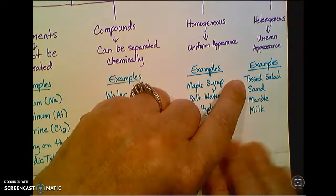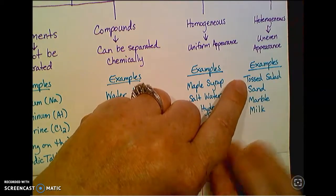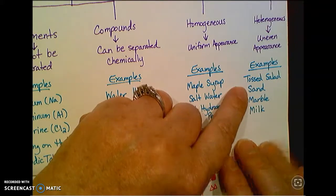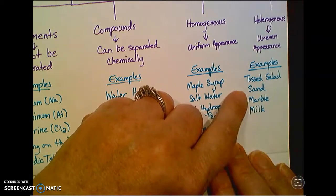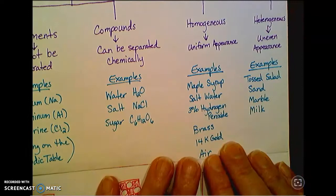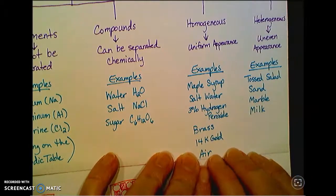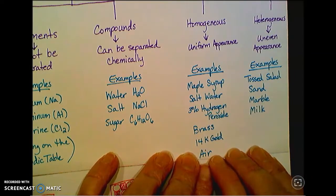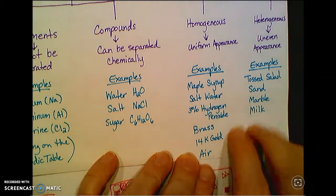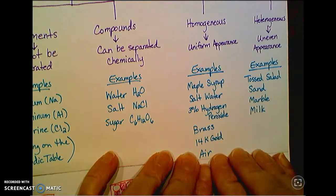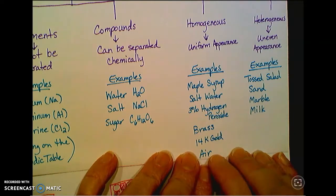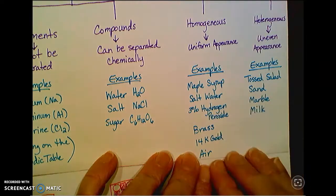For heterogeneous mixtures, things like a tossed salad: lettuce, tomatoes, cucumbers. You can see all the separate parts. Sand at the beach, you can see little whiter specks, darker specks. It's not one type of particle in there. Marble is a good example of a solid that's a heterogeneous mixture. It's got those streaks and swirls in it, even though it's one substance.